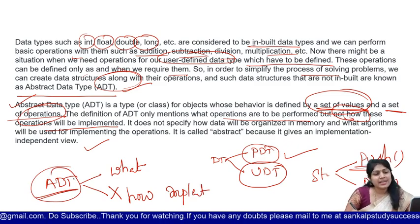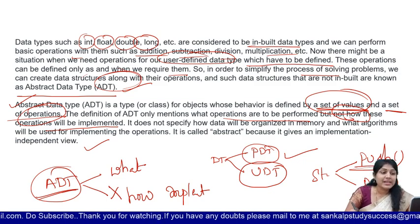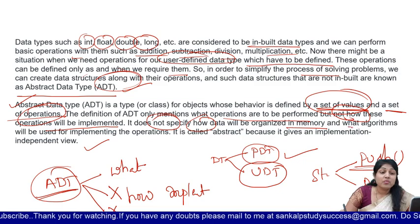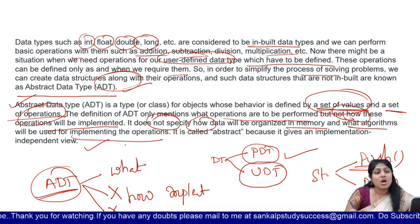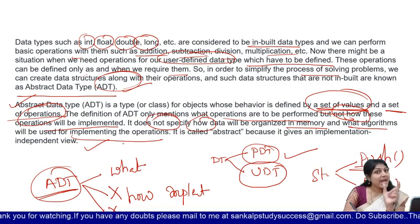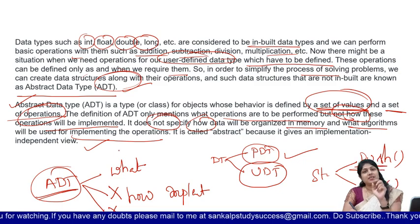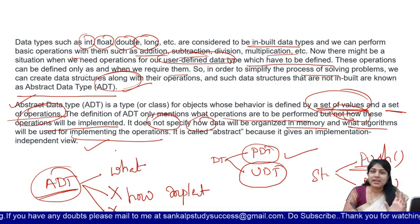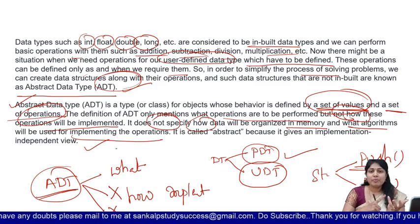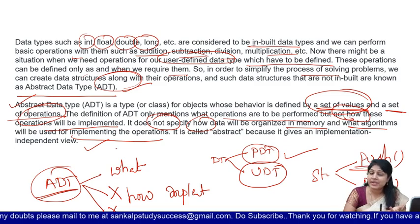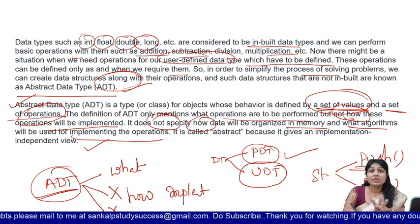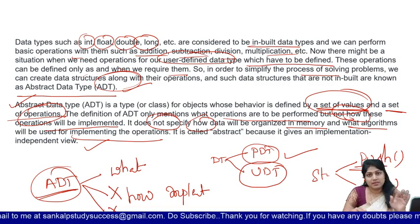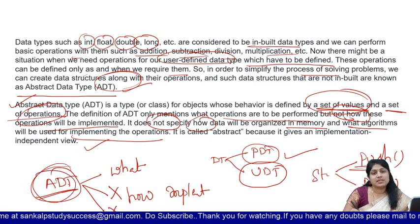ADT does not specify how data will be organized in memory, and also ADT does not specify what algorithms will be used for implementing the operations. Why? Because of the term 'abstract' — abstraction is there. Abstraction is nothing but hiding the data. In abstract data type, it is visible what operation is performed, but how the operations are performed, how the operations are implemented, and how the data are organized in memory — all of that is abstraction. ADT will not tell that. Clear up to here.